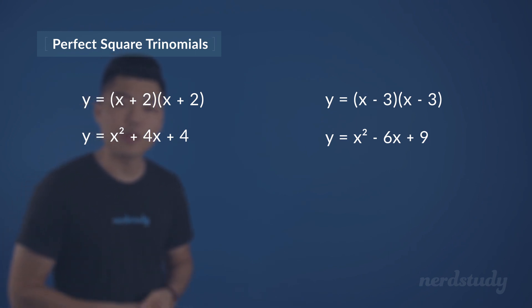These are known as perfect square trinomials, where the form can be written as either a squared plus 2ab plus b squared, or a squared minus 2ab plus b squared.